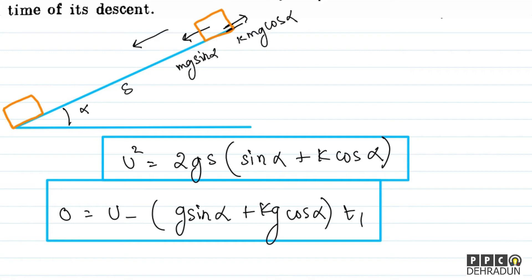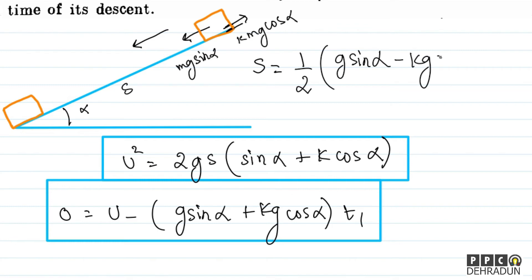For this downward journey, using s = u·t + ½a·t², since the initial speed is zero, this simplifies to: s = ½·g(sin alpha minus k cos alpha)·t2². This is our equation for the downward journey.